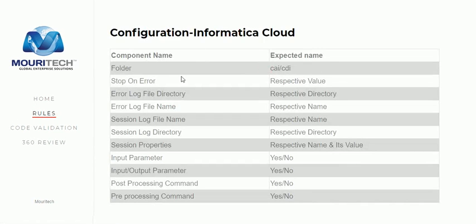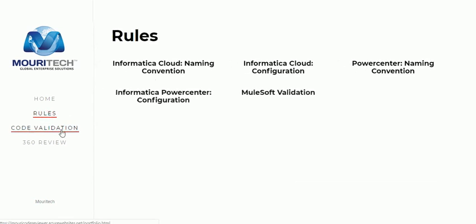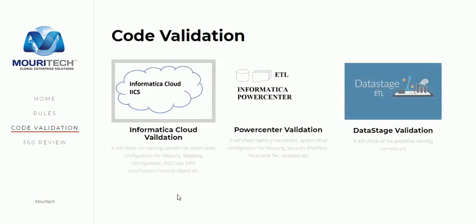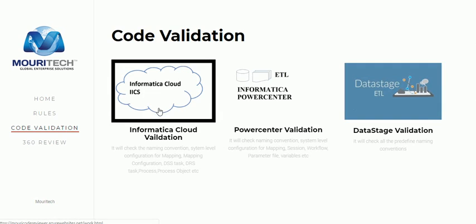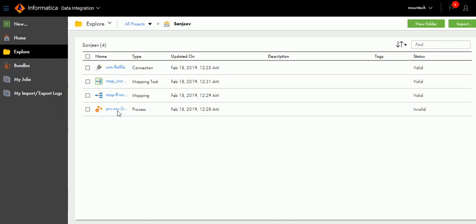There is also Informatica Cloud rules — folder should start with 'cai' or 'cdi', stop on error setting, session log file name — all these rules need to be defined and will be checked in the code validation phase. For code validation, as discussed, it is very easy to use. We just need to upload the code here and it will provide the output. Before uploading the code, we need to export the code from Informatica Cloud.